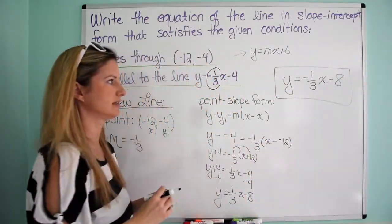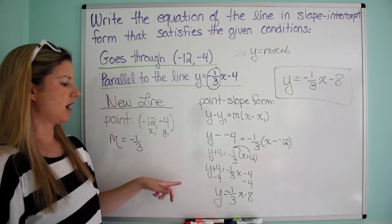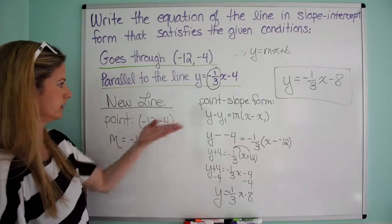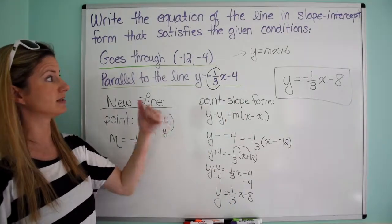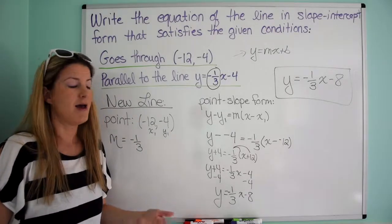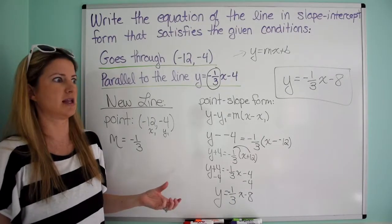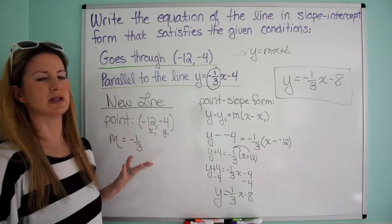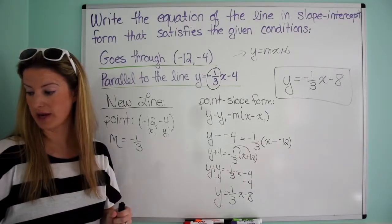So we get the same answer — thank goodness, because if we got a different answer, something was wrong. We had a point and a slope, we put it in point-slope form, simplified it out, and got the same answer as way one. This is not only another way, but also a great way to check. If you're taking a test and want to verify your answer, you can do it these two ways.